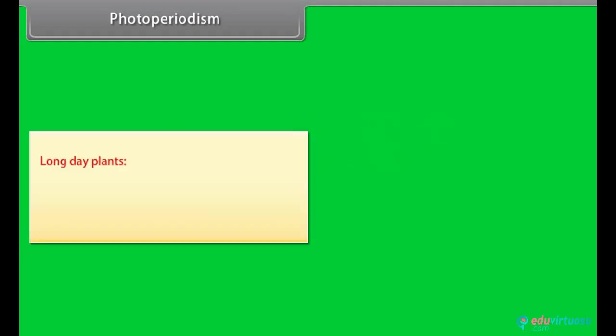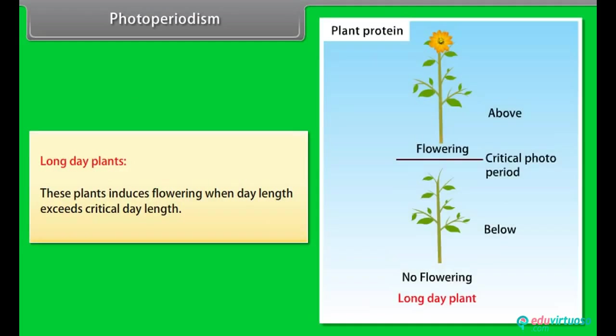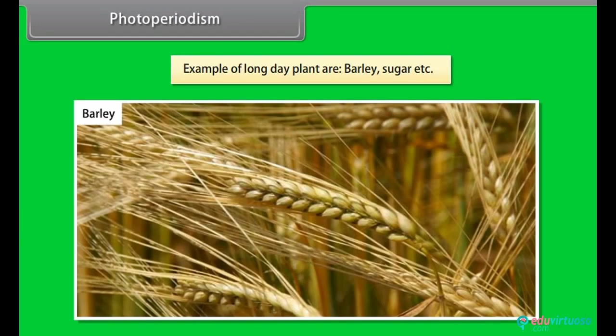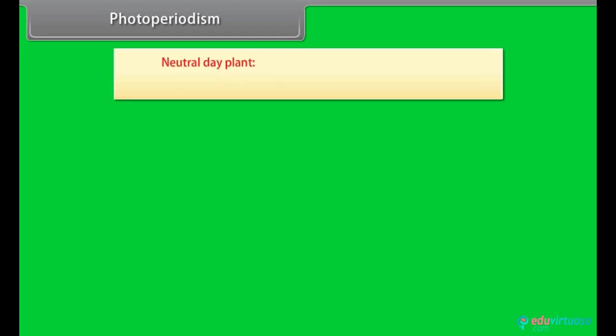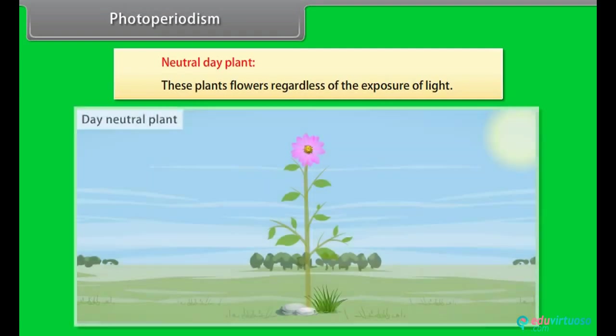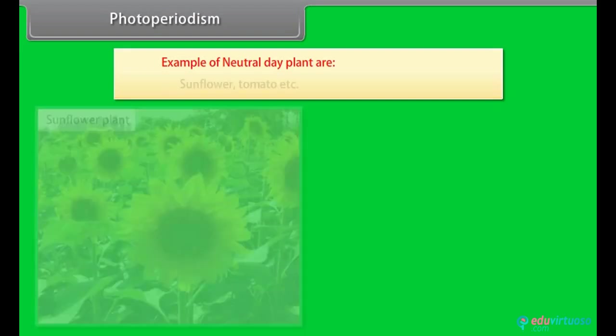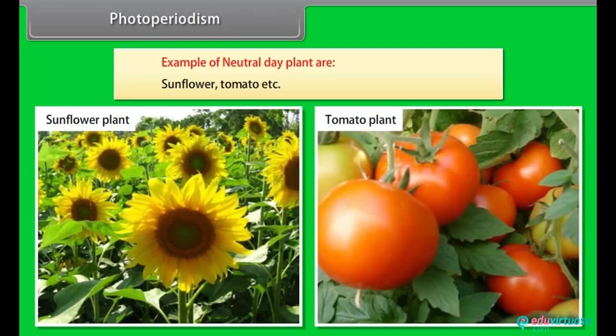Long day plants. These plants induce flowering when day length exceeds critical day length. Example of long day plants are barley, sugar beet, etc. Neutral day plants. These plants flower regardless of the exposure of light. Example of neutral day plants are sunflower, tomato, etc.